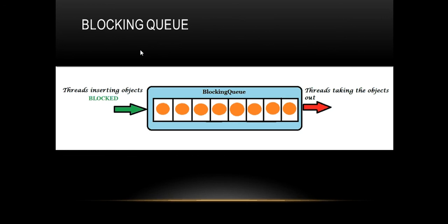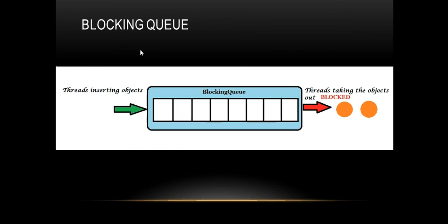The first set of threads remains blocked until a few objects are taken out by the other set of threads on the right side, denoted by the red arrow. Once space is available, the first set of threads gets unblocked and inserts more objects. The second set of threads takes objects out until none remain, at which point they get blocked by the blocking queue until new objects appear.